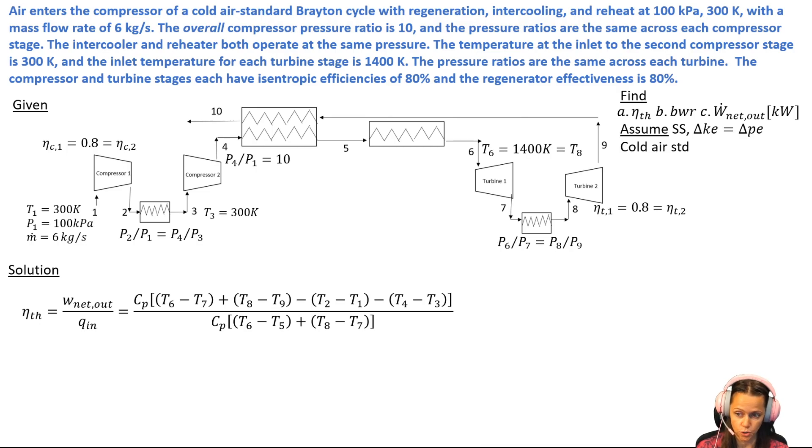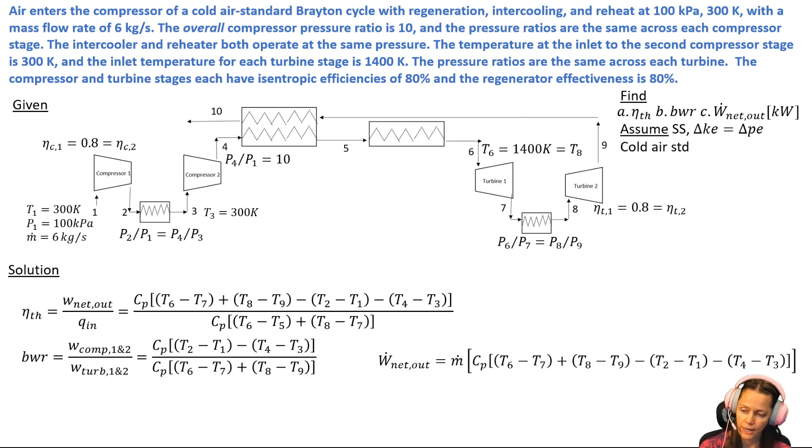Between 7 and 8 we've got a reheat combustor, so this is the reheater for that multi-stage expansion with reheating. We've got two QINs that we do have to deal with here. Now we got the back work ratio, pretty self-explanatory, work of the compressors over the work of the turbines.